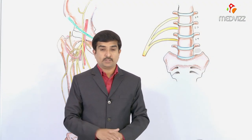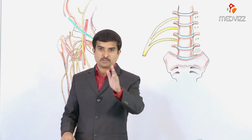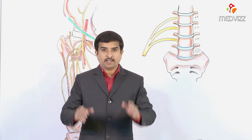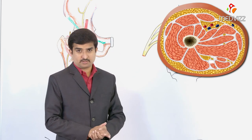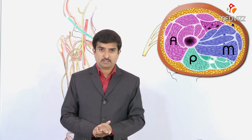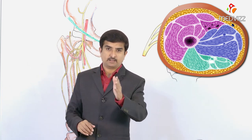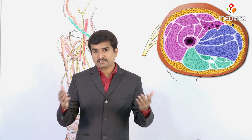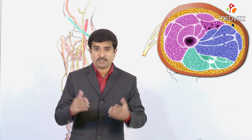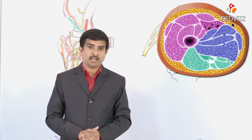The femoral nerve is the largest branch of the lumbar plexus and the chief nerve of the anterior compartment of the thigh. The thigh has three compartments: anterior, posterior, and medial. The muscles of the anterior compartment are innervated by the femoral nerve, the posterior compartment by the sciatic nerve, and the medial compartment by the obturator nerve.